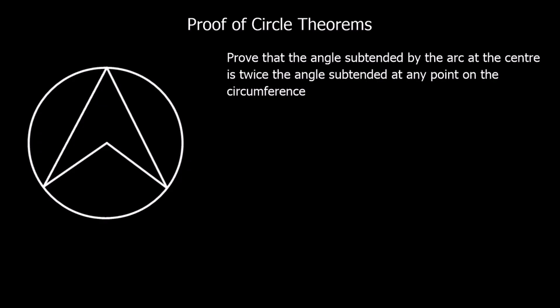This video is about proving the circle theorems. In each case we're going to have to explain step by step why the rule is what it says it is. In this case we've got to prove that the angle subtended by the arc at the centre is twice the angle subtended at any point on the circumference — so we've got to prove that the angle at the centre is twice the angle at the circumference.